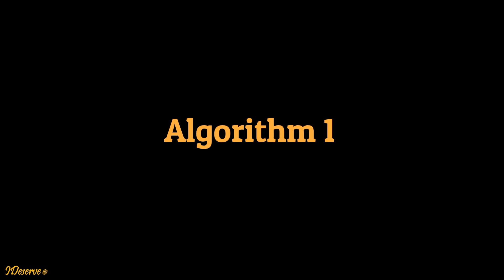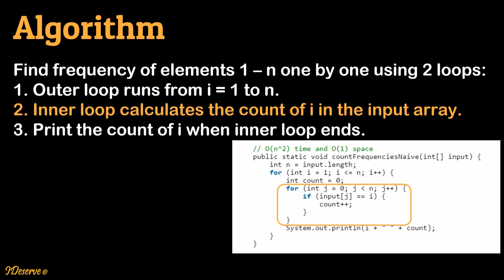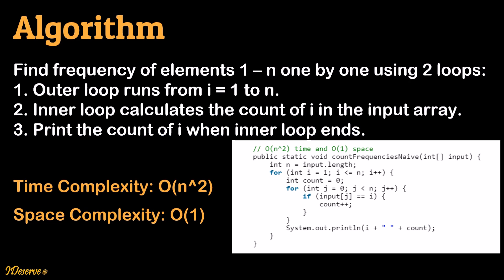Let's discuss the first algorithm to solve this problem. This is the naive approach, so we will skim through it quickly. Find frequency of elements 1 to n one by one using 2 loops. The outer loop runs from i equal to 1 to n, and the inner loop calculates the count of i in the input array, then prints the count when the inner loop ends. Time complexity is O(n²) and space complexity is O(1).